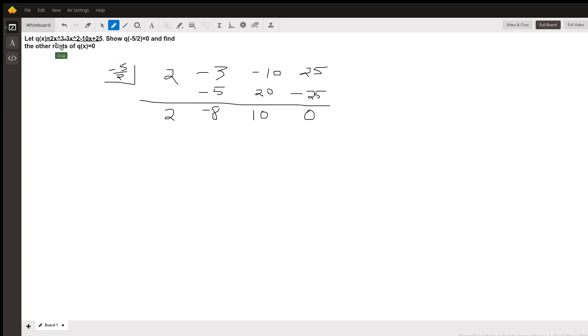So here are the coefficients of the terms of the polynomial function: 2, negative 3, negative 10, 25, written in descending order.